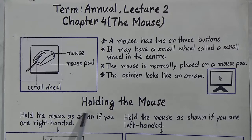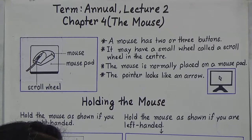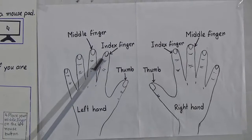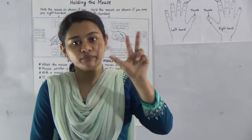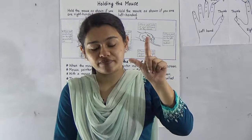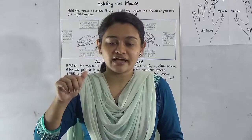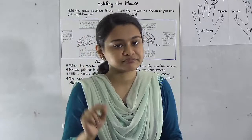Now we will know how to hold a mouse. We can hold the mouse with our right or left hand. The three fingers used are: the thumb, the index finger, and the middle finger. If we are right-handed, we will hold the mouse with the thumb, index finger, and middle finger of the right hand. If we are left-handed, we will use the thumb, index finger, and middle finger of the left hand.